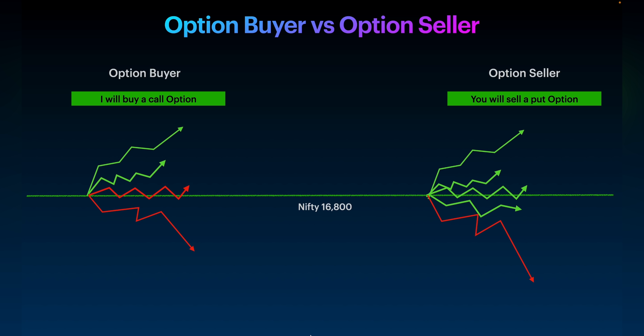If you compare option buyer with option seller, the probability of the option seller making profit is significantly higher. This is why big financial institutions and high net worth individuals prefer option selling over option buying — because the probability of making profit is high. This is a very important difference between option buyer and option seller which you need to understand.